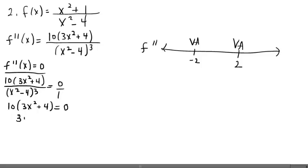Divide both sides by 10. Subtract a 4 and divide by 3. Bring in the square root. But I want you to notice that when you do bring in the square root, we'll have imaginary solutions. So from this, we can see that we have no x values at which the second derivative equals zero.